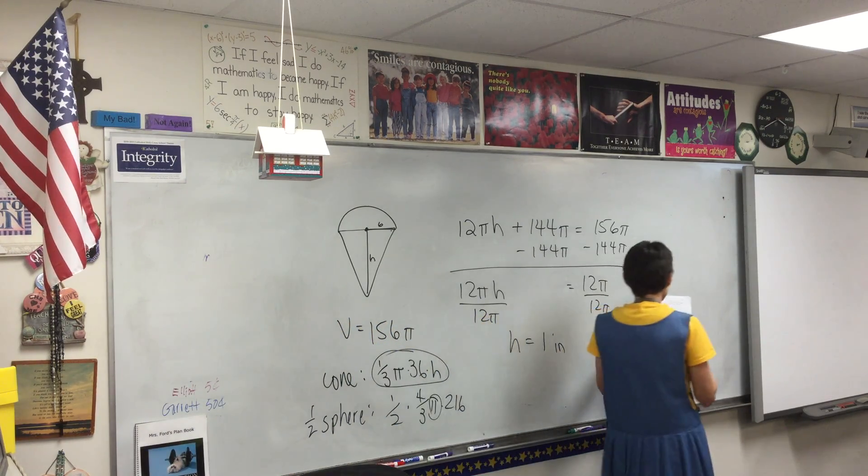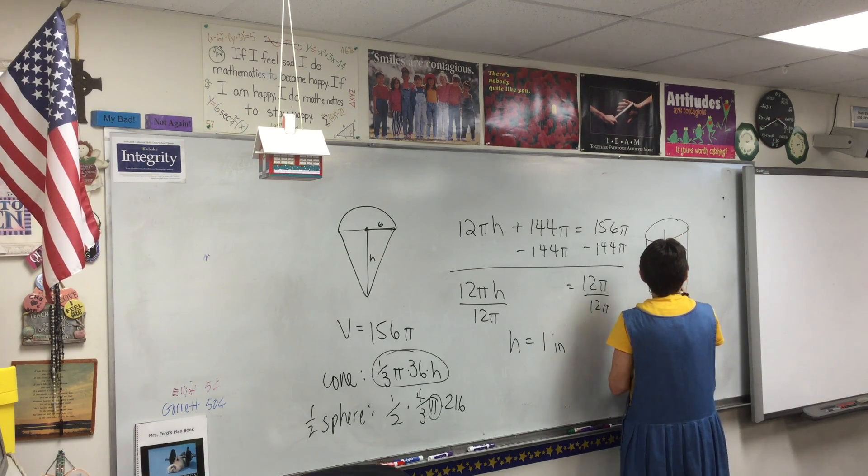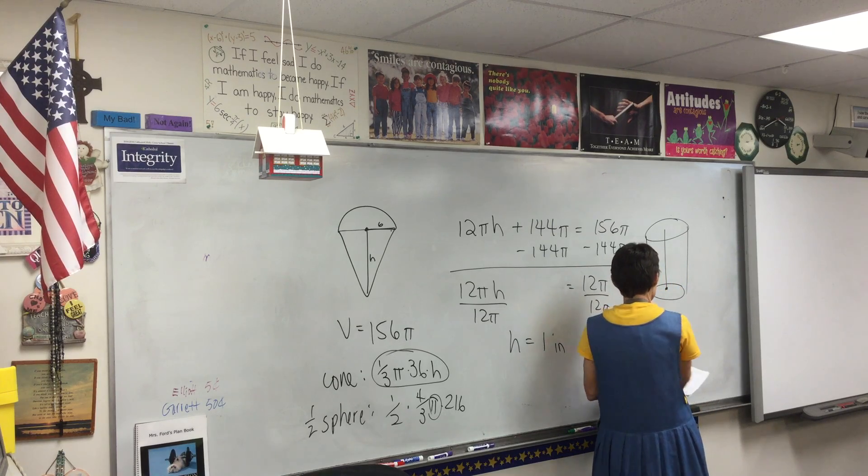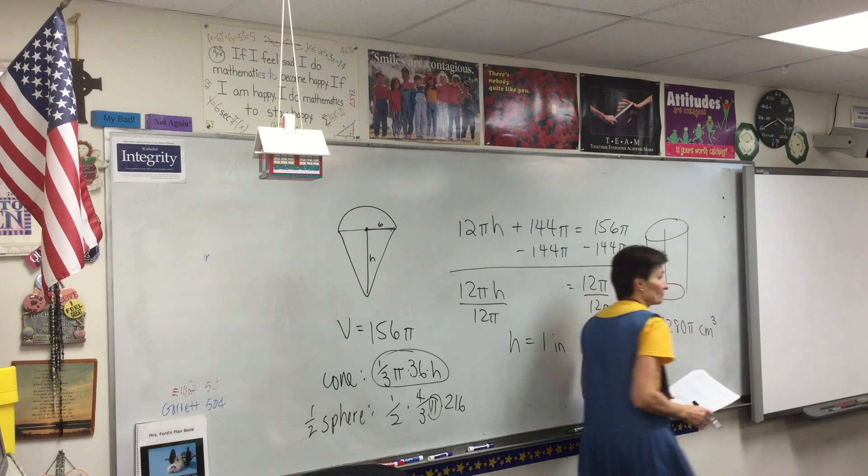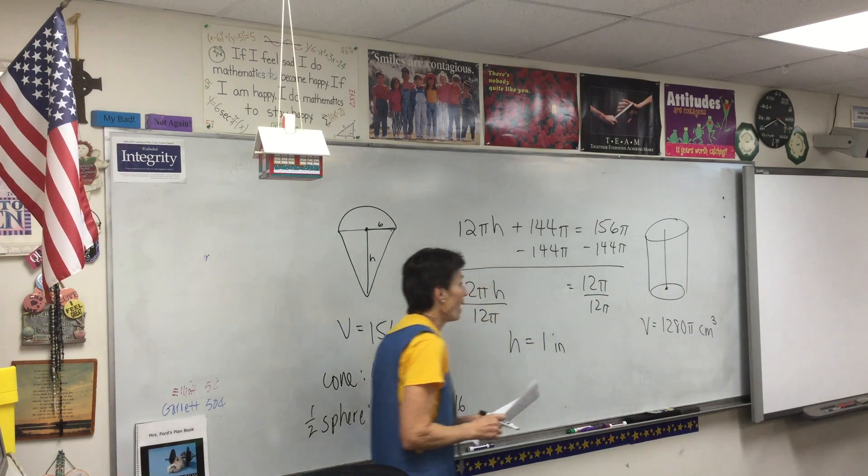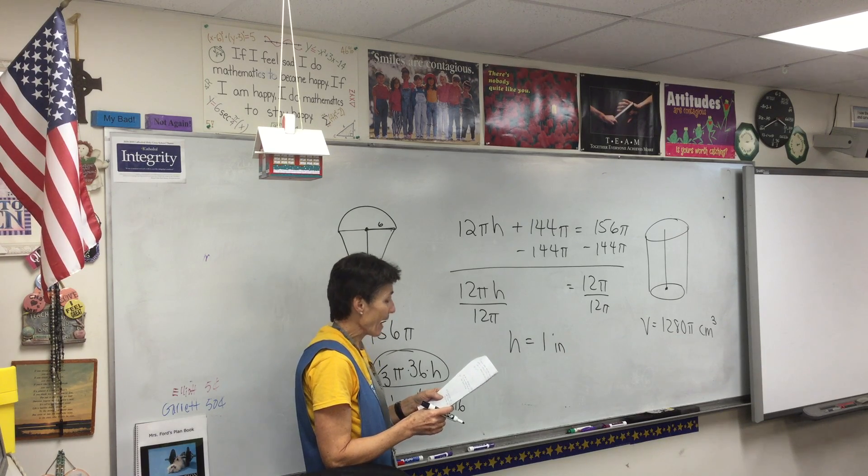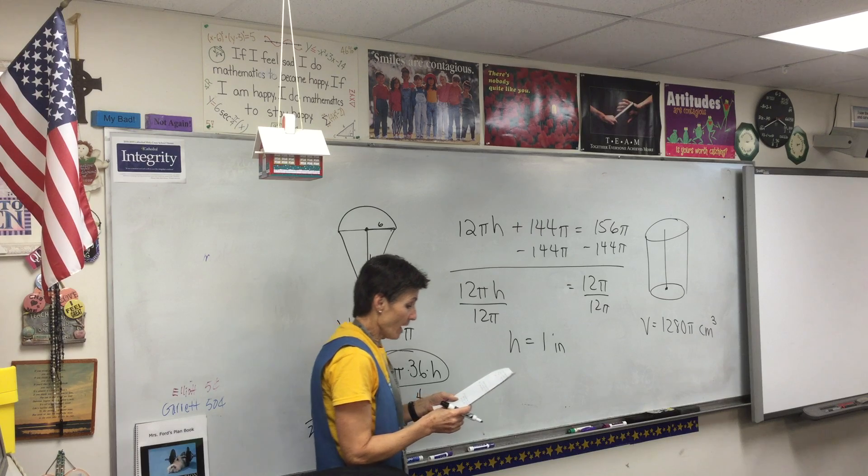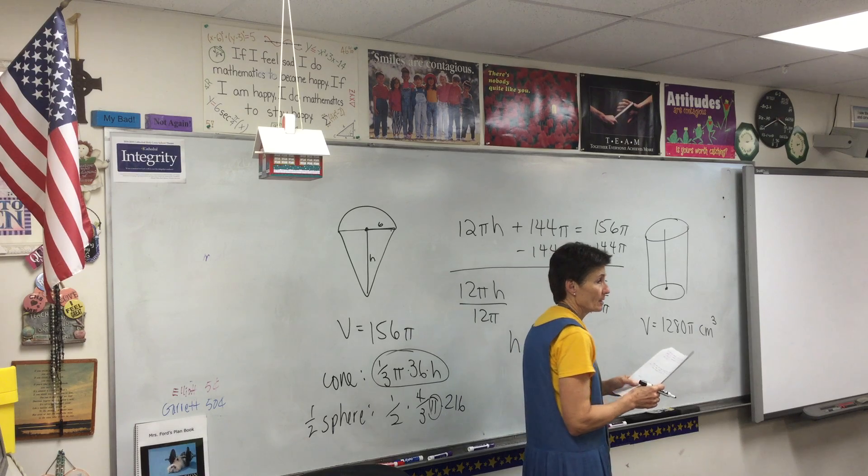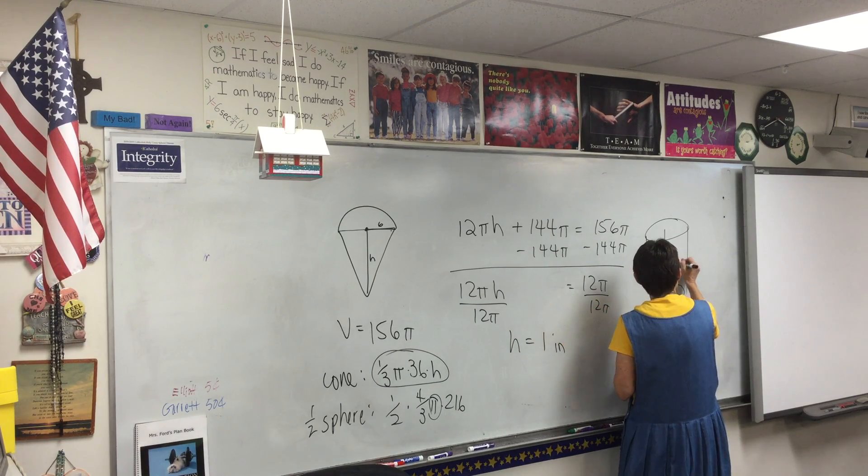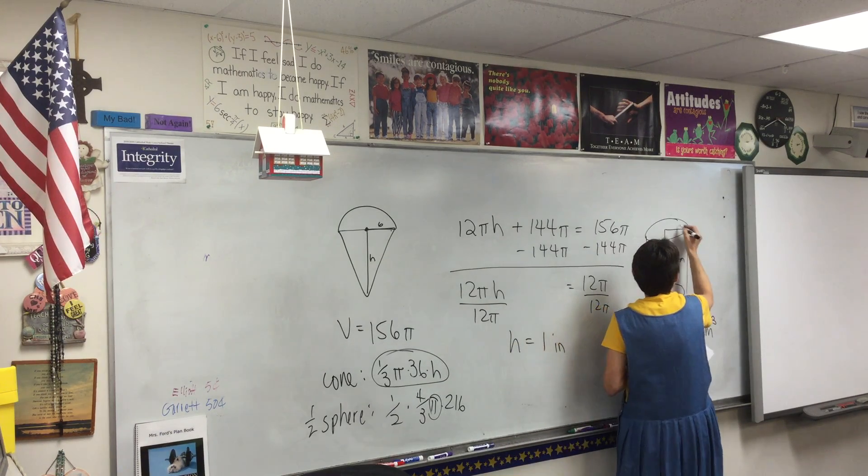A cylindrical tank. We have a cylinder. Holds 1,280π cubic centimeters. So the volume of the cylinder is that. The height of the tank is 20 centimeters. Find the radius.